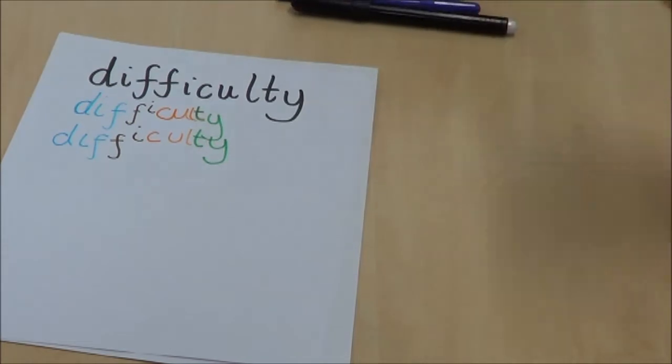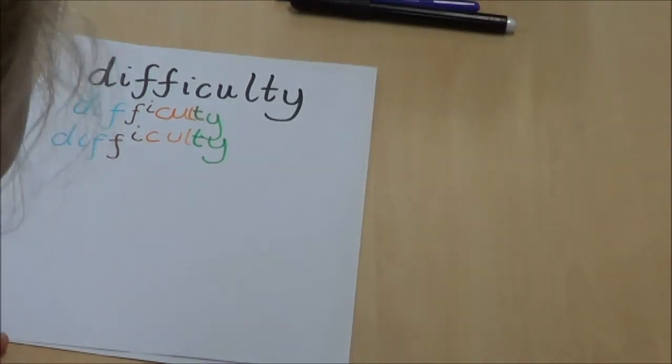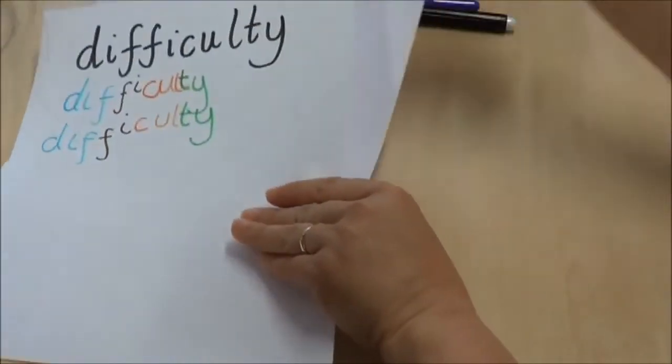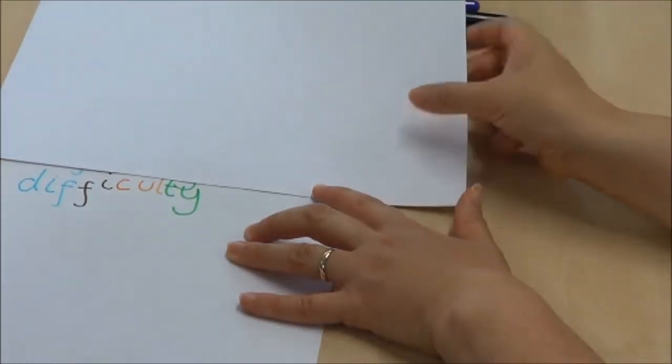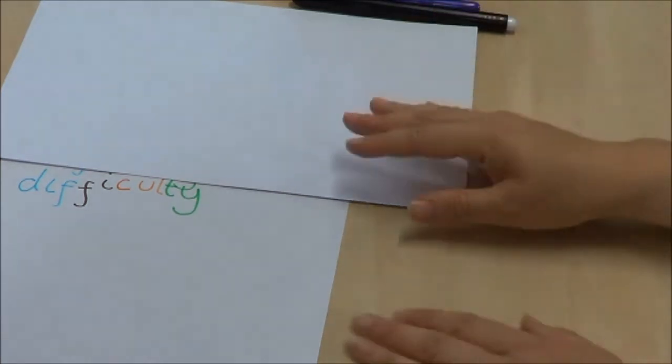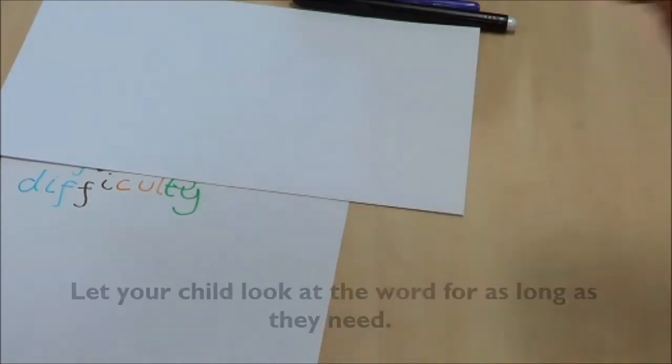Okay. What was the next step? So I need to look at it very carefully and look at mine. Because you've written it out twice, I'm just going to cover that one up so you can just look at the one that you're happy with. And then you look at it for as long as you need to. All the different colours, how you've chunked it.